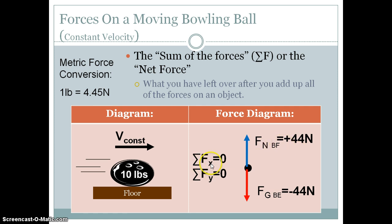Sigma Fx means the sum of the forces in the horizontal direction. There are no horizontal forces, so the sum is zero newtons. In the y direction — the vertical direction — we have one force down at negative 44 newtons plus one force up at positive 44 newtons. Adding those up gives us zero. So it's not that there are no pushes or pulls on the bowling ball that causes it to move at constant velocity; it's that all the forces added up equal zero.